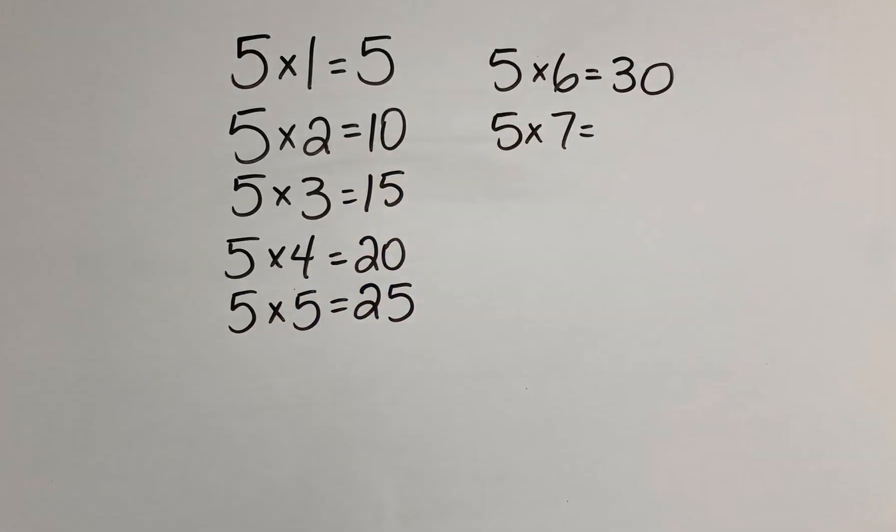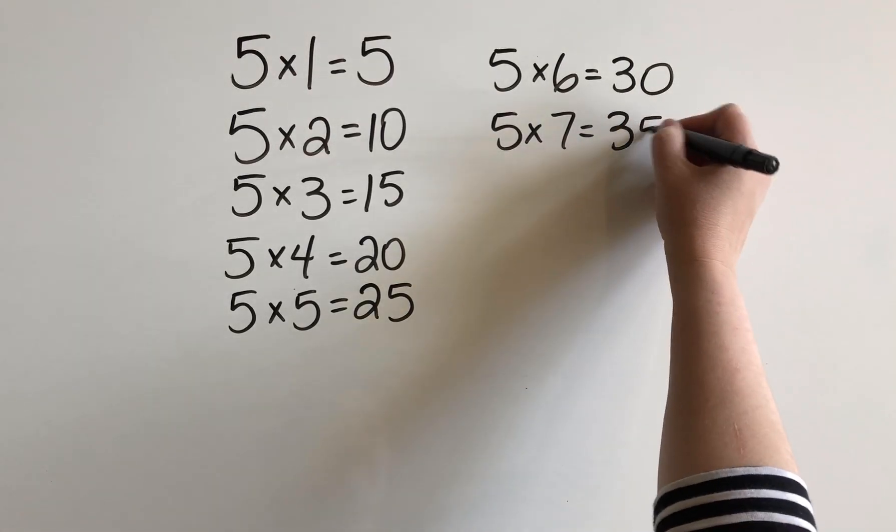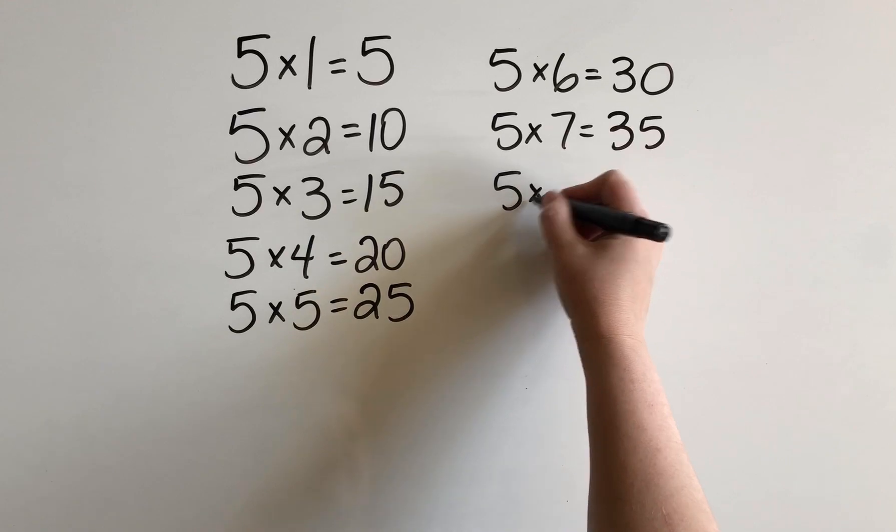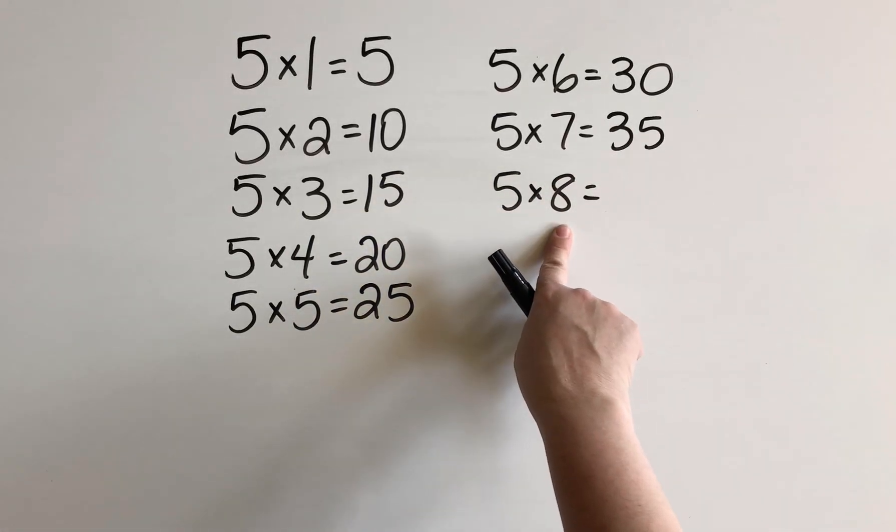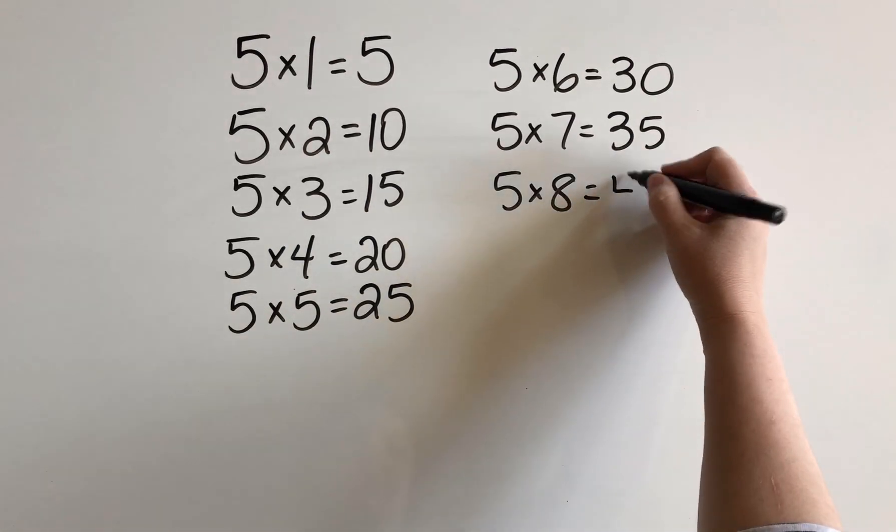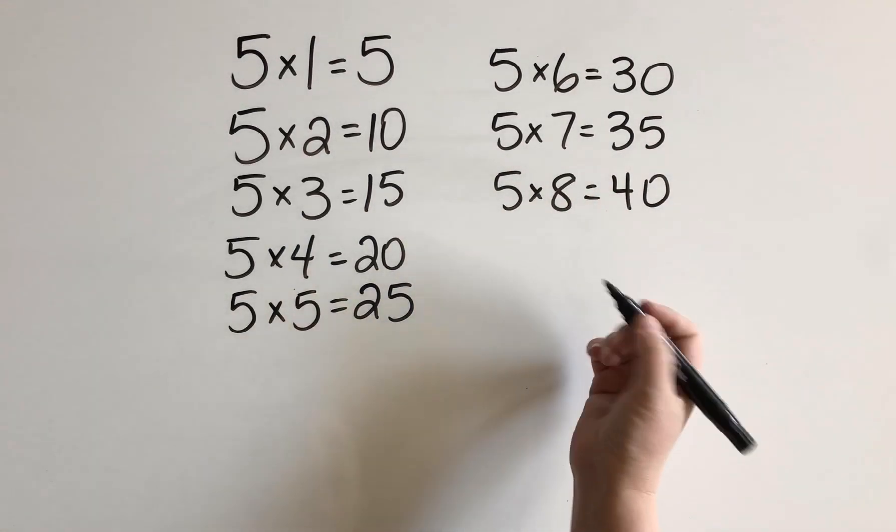5 times 7. Let's start with 10 times 7 to give us 70, and figure out half of that, which is 35. For 5 times 8, we'll start with 10 times 8 to give us 80. And then half of that gives us 40. I was one step ahead there.